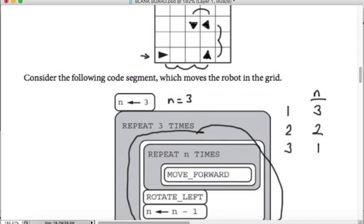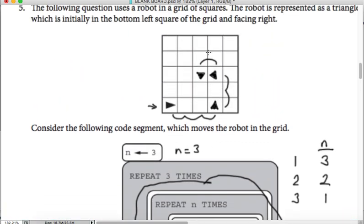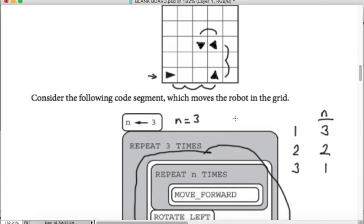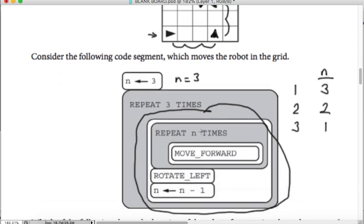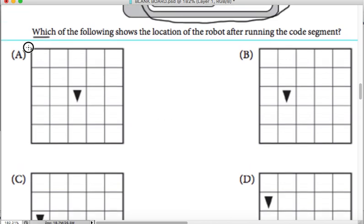We are done with the program. Let's see which answer choice gives you this: in the middle of the grid and looking down. As you see, the answer will be A. This is the answer choice, so we are done for this question.